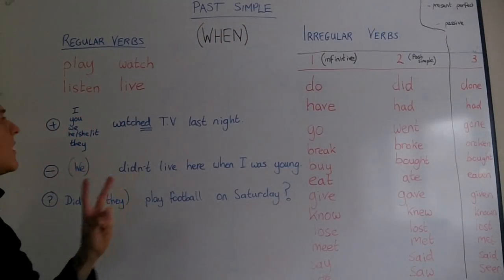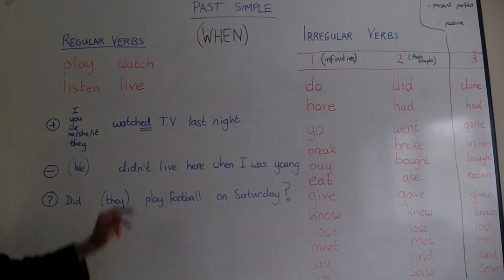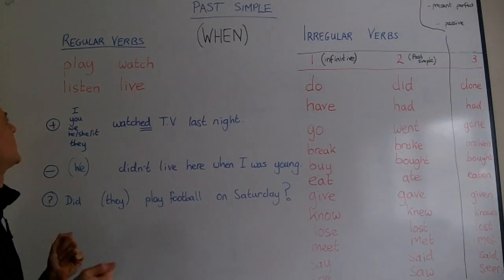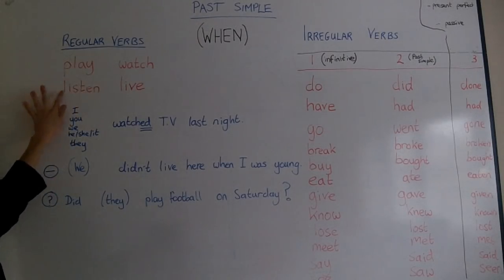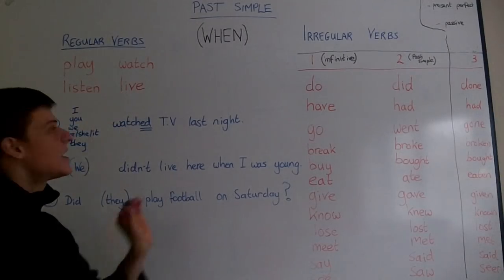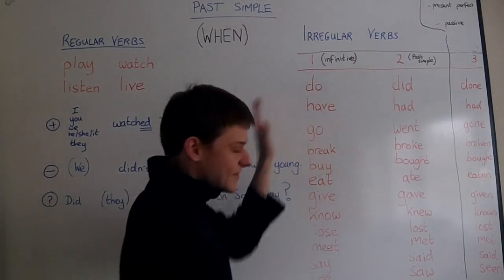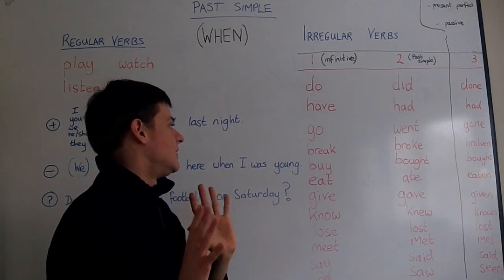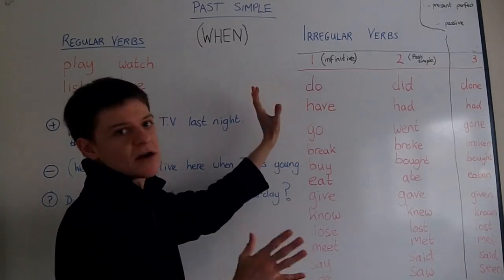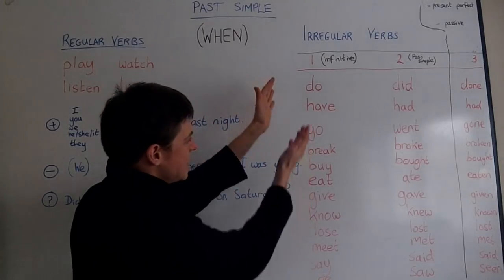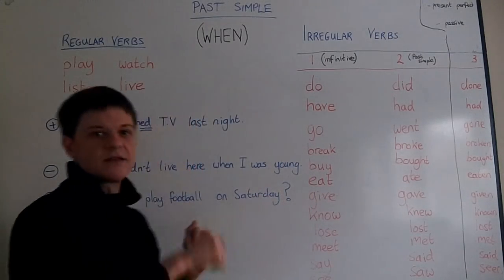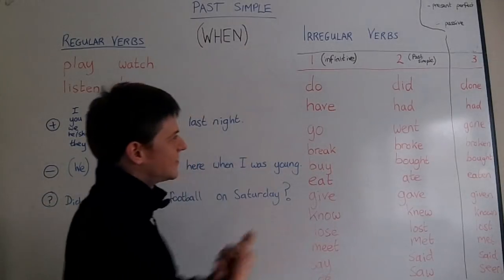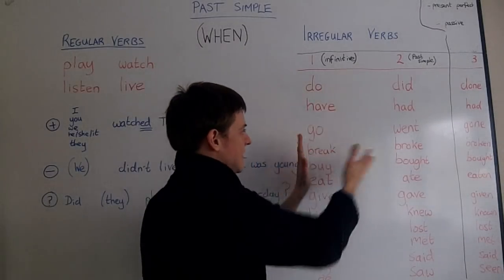We have two kinds of verbs with past simple. We have regular verbs — typical, usual verbs like play, watch, listen, and live. And we have irregular verbs. There are quite a lot of irregular verbs, maybe 100, maybe more. But try to learn 50 or 60 at first. Here are some, but under the video there is a link to more complete lists, bigger lists, where you can learn lots of these irregular verbs.